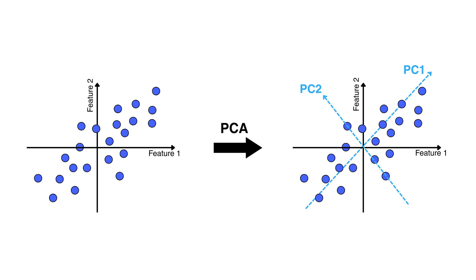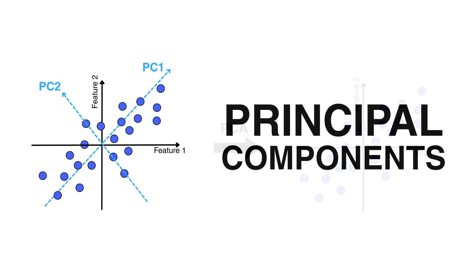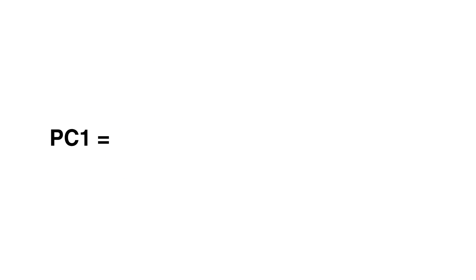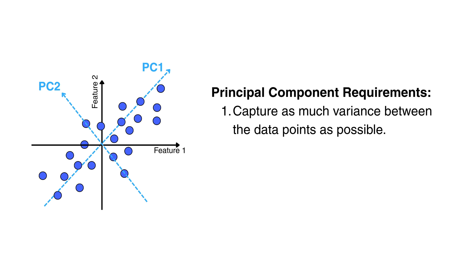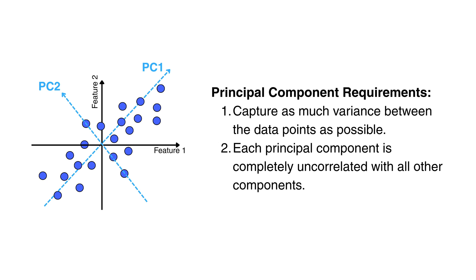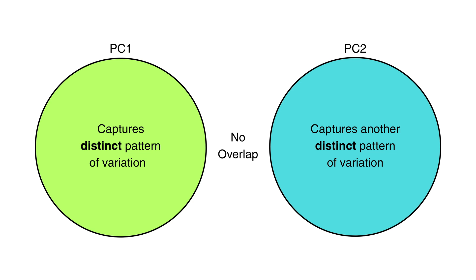PCA is about transforming your data by finding a new set of axes for it. These become your new features called principal components. Each of these components is simply a combination of your original features, but they're constructed in a way that first captures as much variance or separation between the data points as possible, and second, that each principal component is completely uncorrelated with all the other components. By forcing the components to be uncorrelated, PCA makes sure that each one adds new information — it captures a unique pattern of variation in the data rather than just repeating what a previous component already captured.